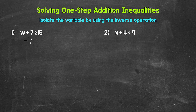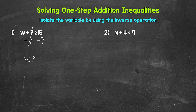The inverse operation of addition is subtraction. So let's subtract seven from the left side of the inequality. Whatever we do to one side of an inequality, we must do to the other in order to keep it balanced — so subtract seven from the right side as well. These sevens cancel each other out, and w is now isolated. So we have w is greater than or equal to eight, since 15 minus seven gives us eight.